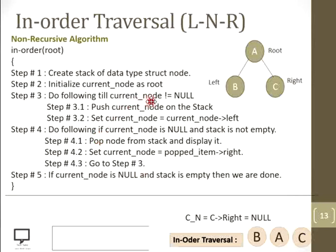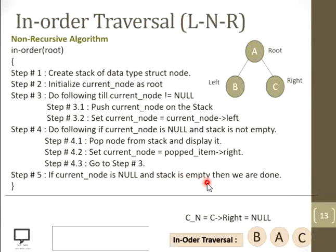Go back to step three — condition is false. Go to step four: current node is null but the stack is empty now — there is no data available in the stack. So this condition is false, and we do not enter the loop. We are done. The in-order traversal of the given tree is B, A, C. I hope you understood the in-order traversal with the help of the non-recursive algorithm.